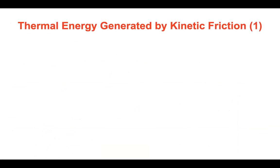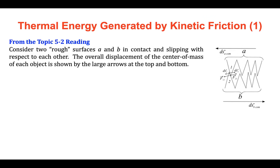In this problem of the two round objects rolling down the curved ramp, we assumed they rolled without slipping, so kinetic friction forces were not present. But when kinetic friction forces are present, thermal energy can be created. Going back to the topic 5-2 reading, there was a picture showing two surfaces, A and B, which on a microscopic level are not smooth but have a jagged appearance. Those jagged peaks can make contact with each other, and through that contact force as one surface moves relative to another, kinetic friction arises, creating thermal energy in the system.